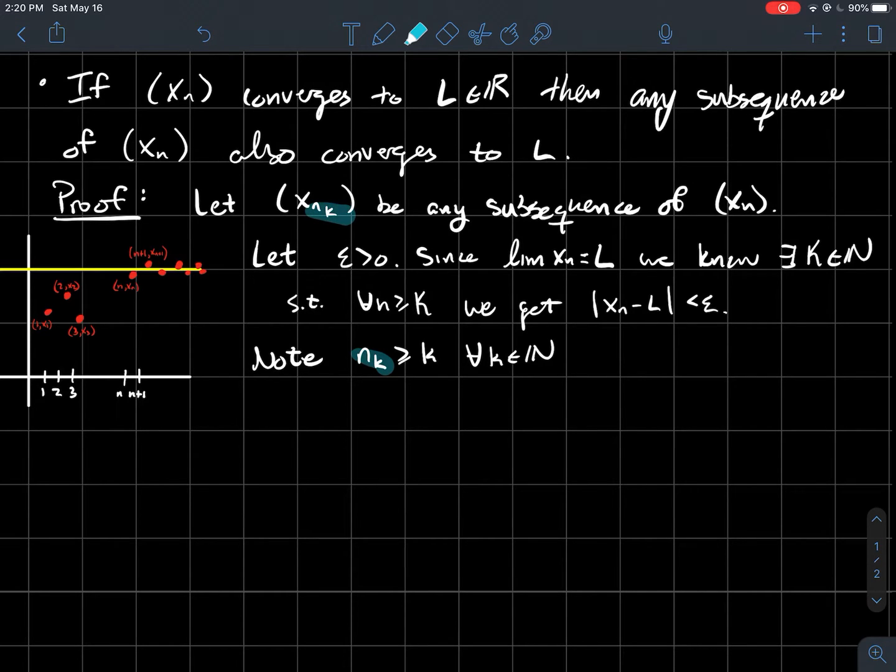So in other words, n sub little k is always at least little k for every single natural number k. And so maybe to think about that, you might try to prove that by induction, say. But I'll skip that for you.